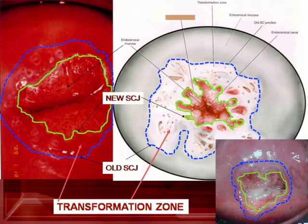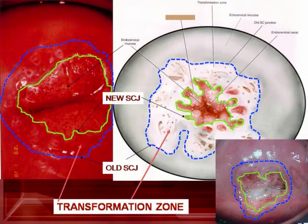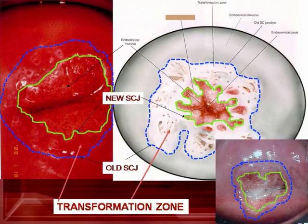Understanding the physiology and anatomy of the cervix, especially the transformation zone, is mandatory. More than 95% of CIN and invasive cancer of the cervix arise from the transformation zone. The transformation zone is the area between the old or original squamocolumnar junction and the new squamocolumnar junction. In this slide, the old or original squamocolumnar junction is represented by the blue line while the new squamocolumnar junction is shown by the green line. Therefore, the area between the blue line and green line is called the transformation zone.